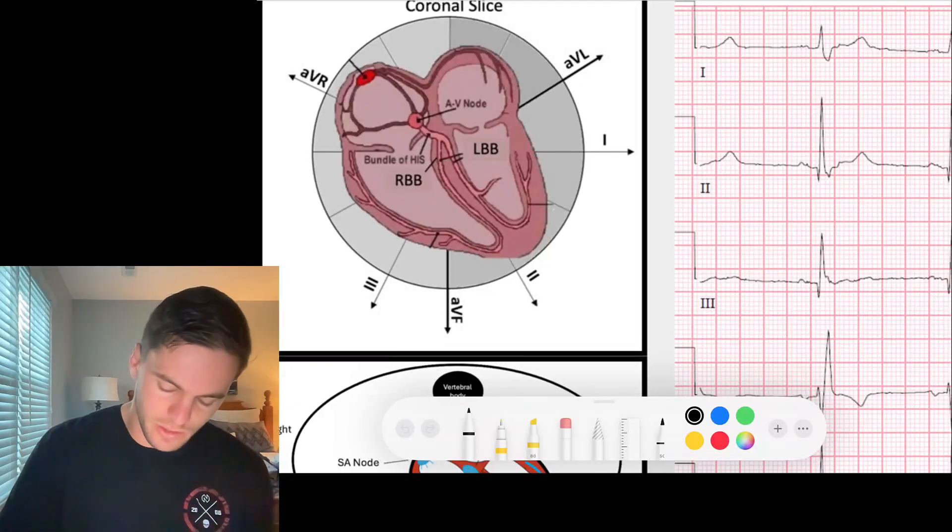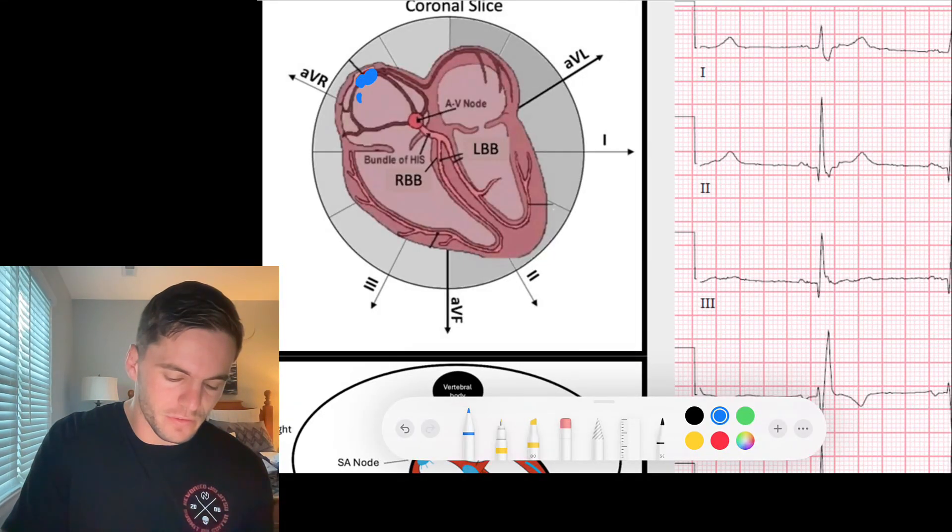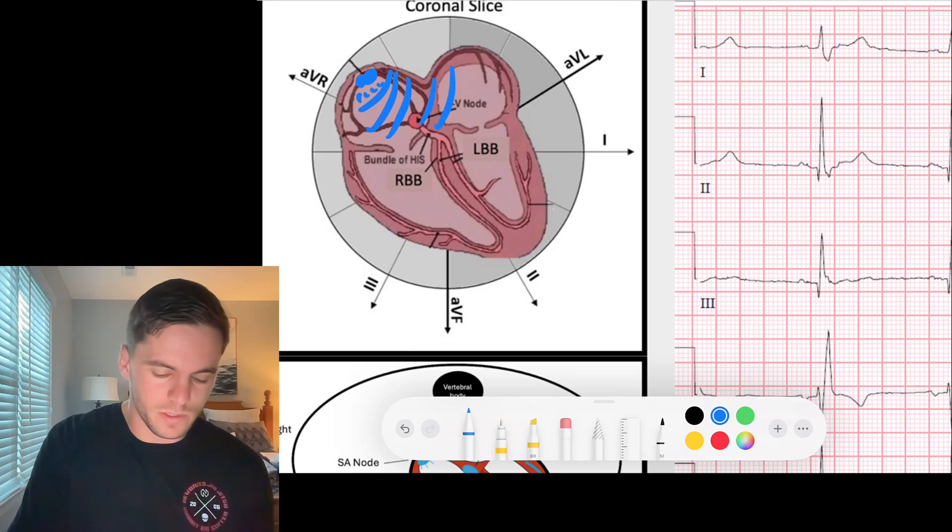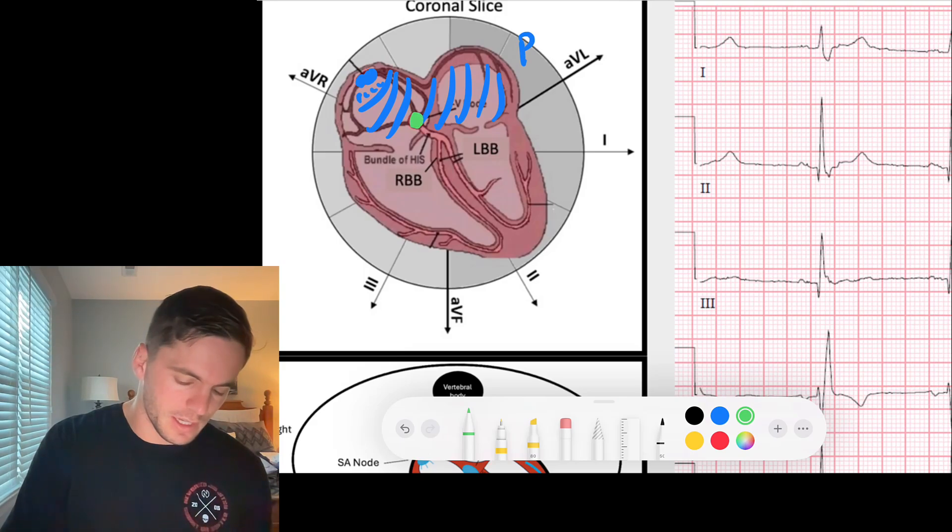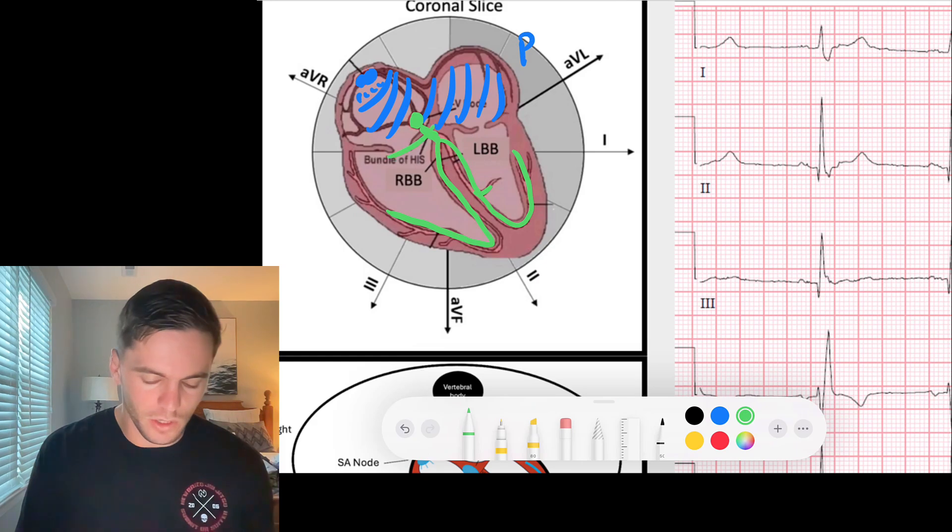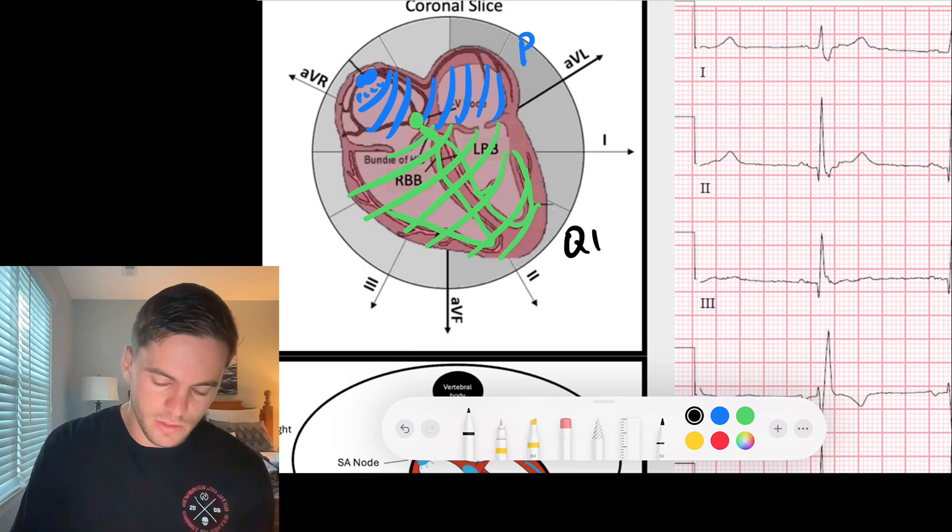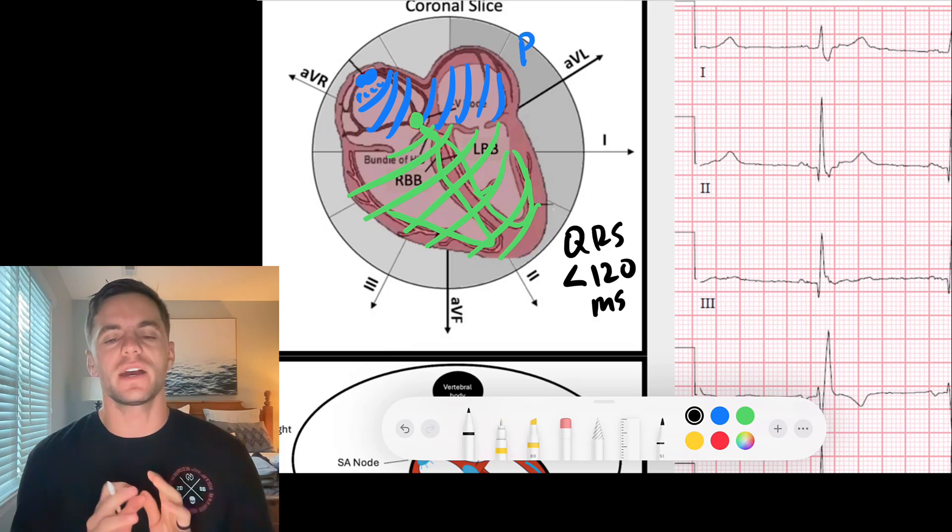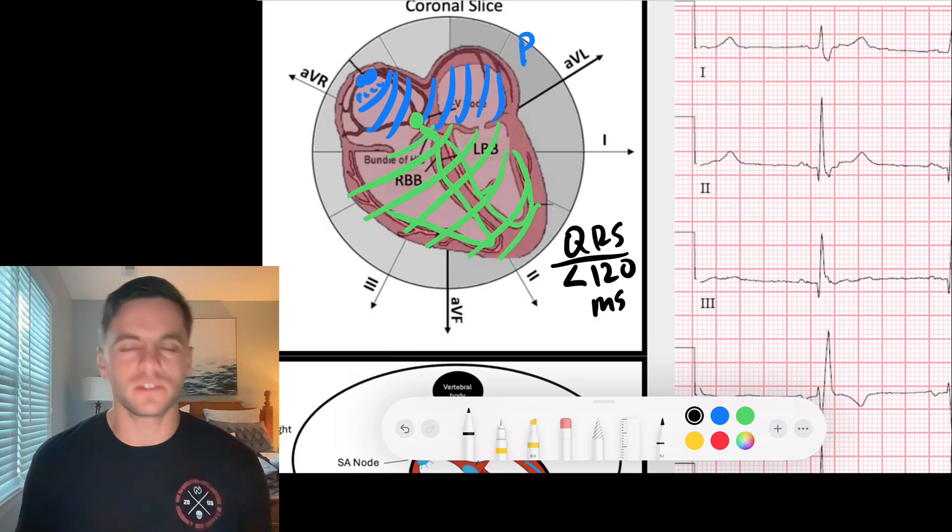Normally when those sinus P waves that are arising from here up in the sinus node fire off, they depolarize the atria like we always know, creating our nice P waves and then those signals get captured by the AV node and sent down the bundle of hiss and then down the right bundle and left bundle which sends signal very rapidly through the ventricles to cause that QRS to fire off very quickly.